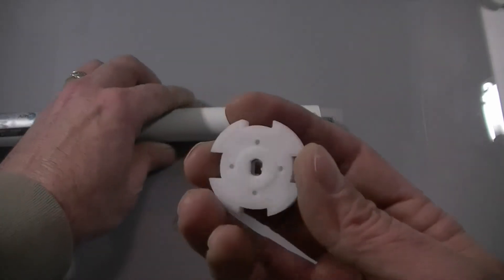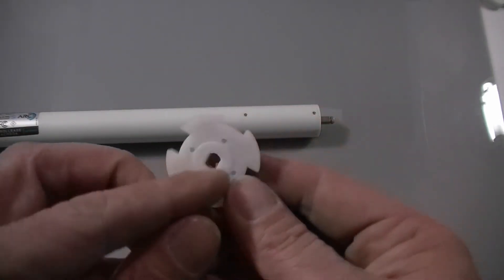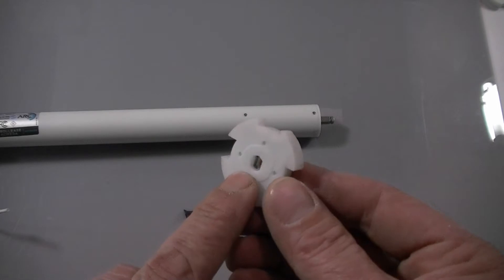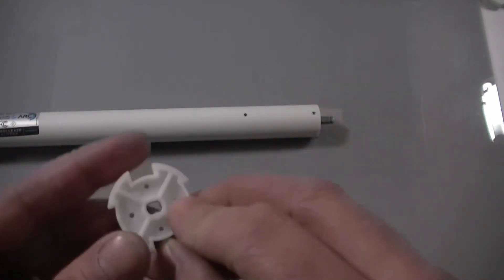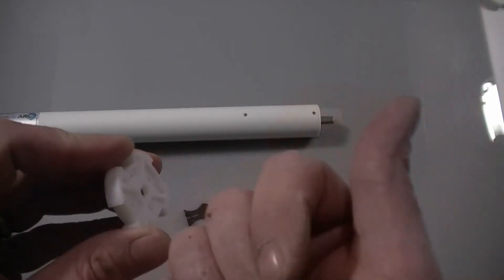The drive adapter has two different sides. This is the side that goes towards the motor. This is the side that points towards the tube.